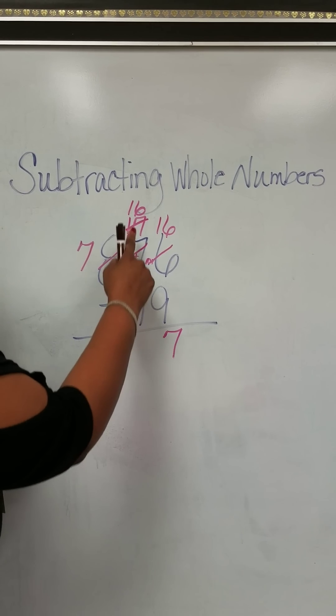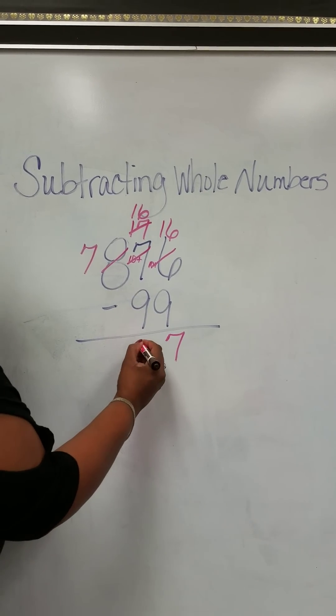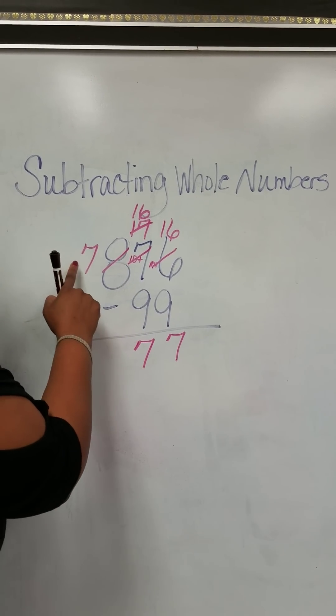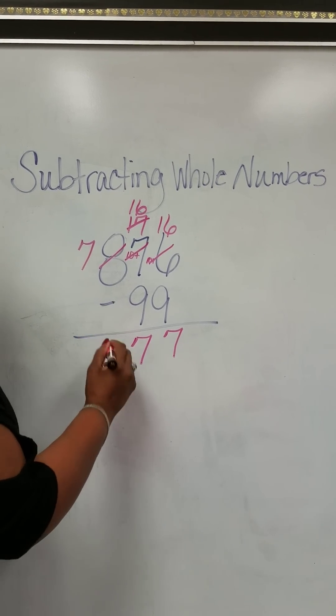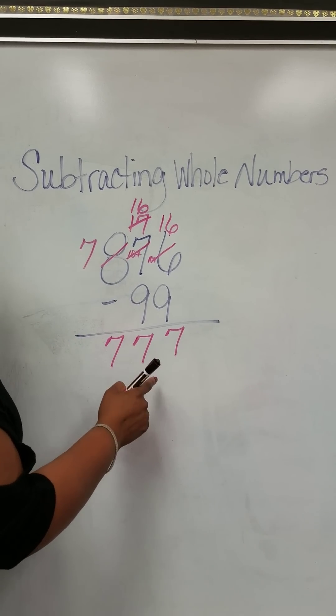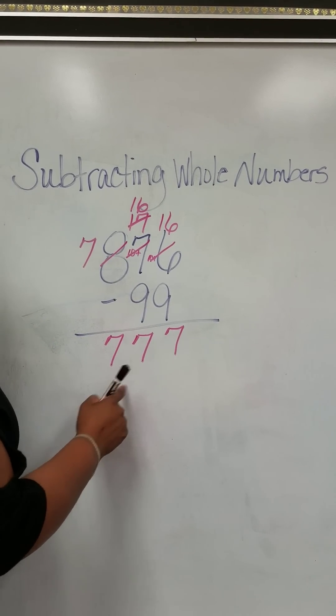Then we go next door. 16 minus 9, the same, 7. And then we have 7 minus nothing, which is 7. So our answer is 777.